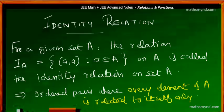then we are dealing with an identity relation. It simply means that for a given set A, the relation IA equals the ordered pair (a,a) such that a is an element of set A, on A is called the identity relation.